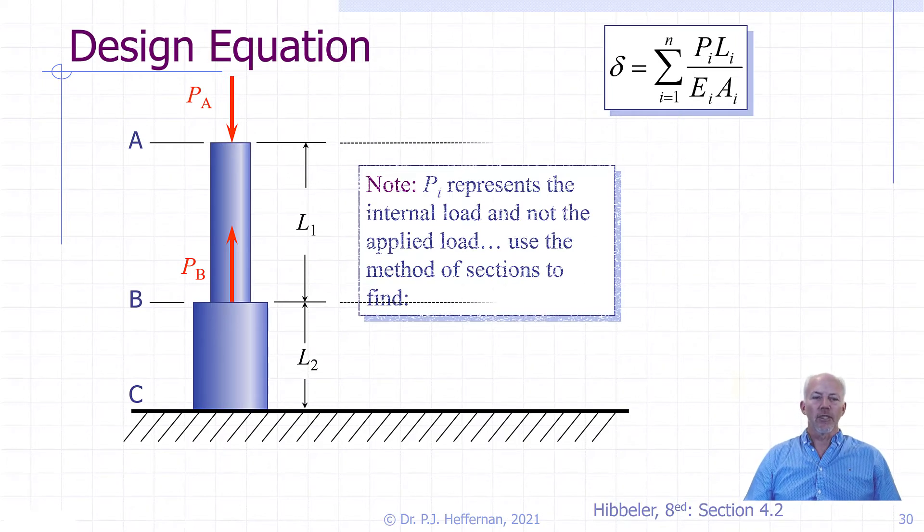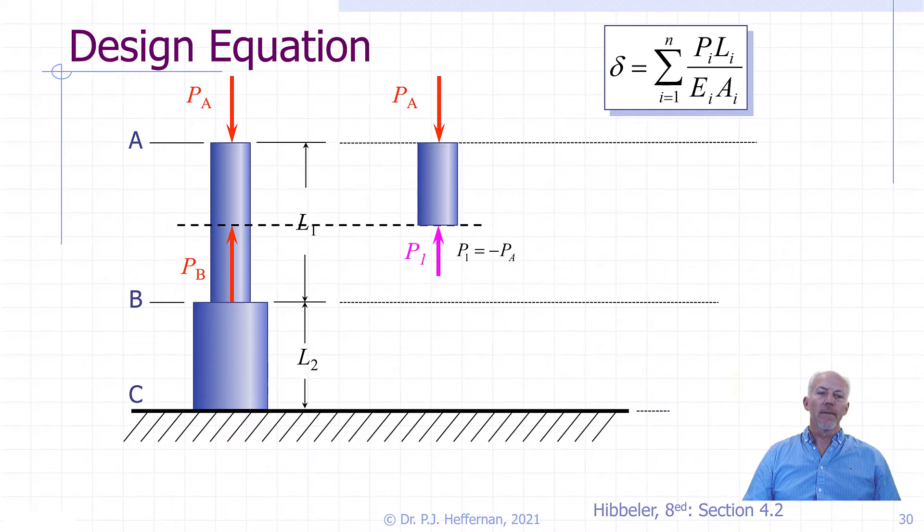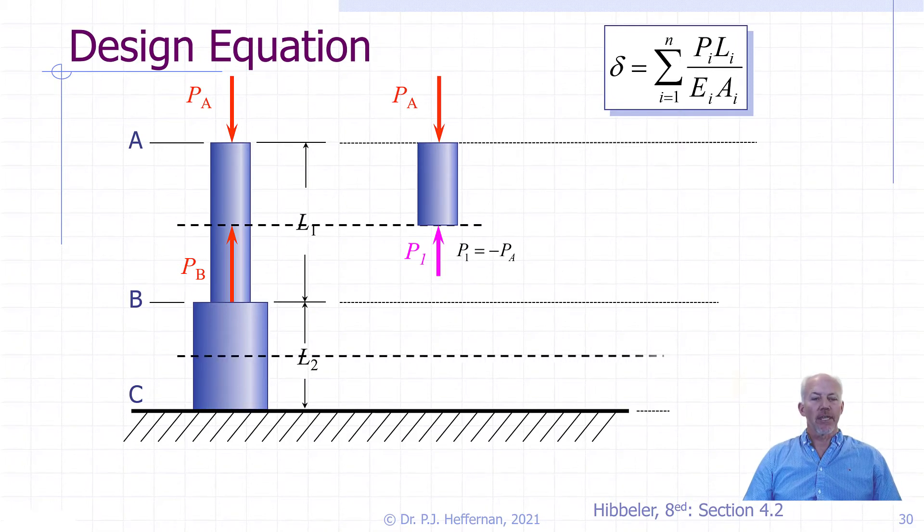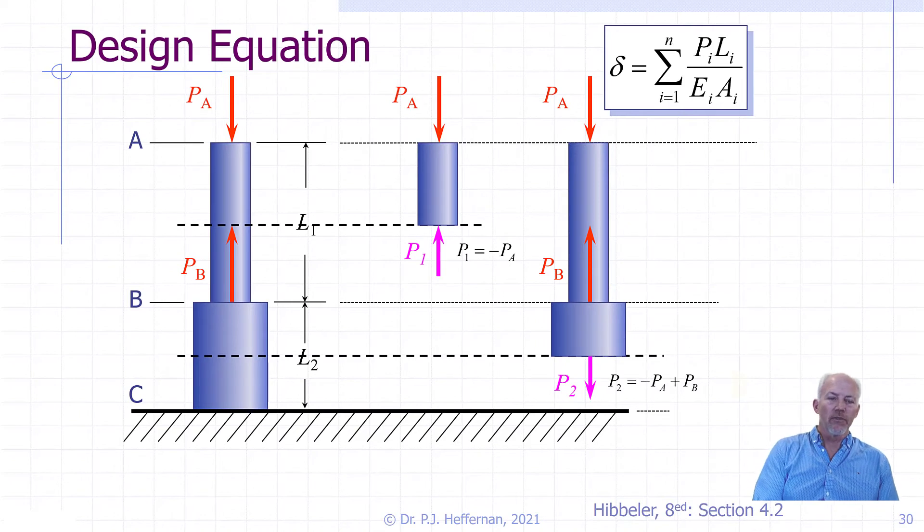Let's start by looking at the topmost part between A and B and applying our method of sections. We cut the member, discard the lower section, and replace it with an internal force P1. We can then use equilibrium to solve for this force, which acts between A and B, there being no other forces applied in the area. We now do the method of sections one more time to determine the internal force between B and C in the same manner.